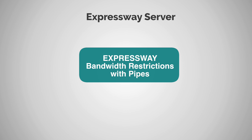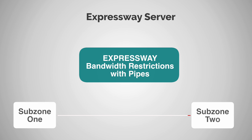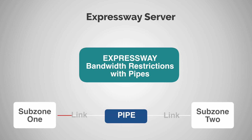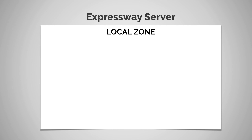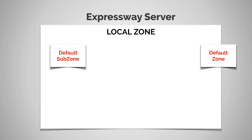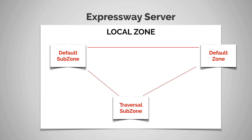The approach with pipes is a little different, and the reason for this is because pipes are applied to links. Remember, links are what make communication between the different zones possible. So going back to our default setup, we'll have a default subzone, default zone, and a traversal subzone with the default links between them.